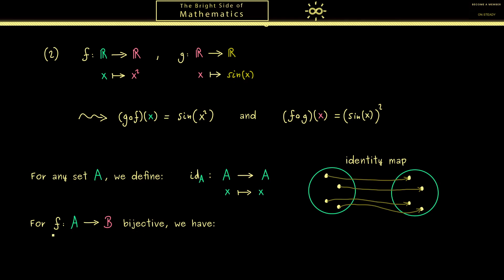On the other hand if we take a bijective map we can look at the compositions f with the inverse map. In particular both orders make sense here because this one is a map that goes from B into B and this one is a map that goes from A into A. More concretely we get out the corresponding identity maps.